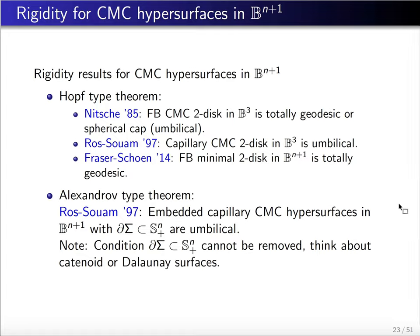The rigidity results for CMC hypersurfaces in a ball include several previous results. The Hopf-type theorem says that a closed CMC 2-sphere in R³ must be a round sphere. In the boundary case, Nitsche first investigated free boundary CMC 2-disks in the 3-ball, showing they can be classified as totally geodesic or spherical caps. Ros-Souam generalized Nitsche's result, showing capillary CMC 2-disks are umbilical, and Fraser-Schoen studied the higher codimension case.